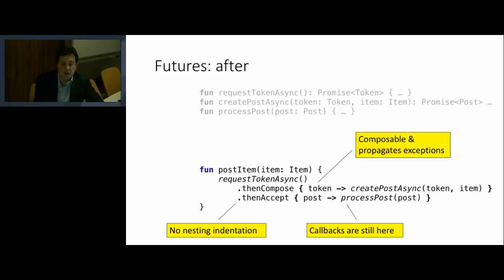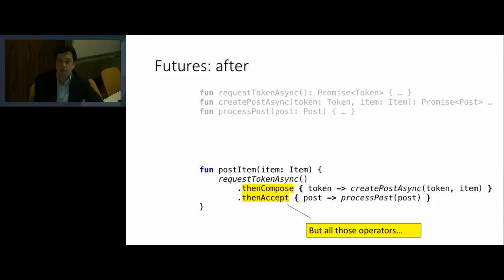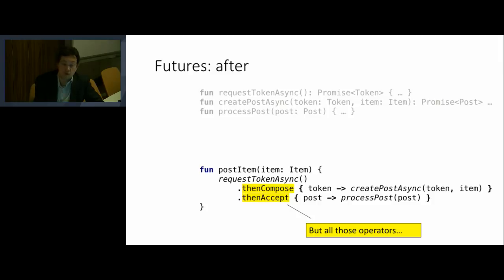Unfortunately, we can't just program with futures and move on, because when we program with futures we have all those operators we have to use. They don't actually add any value to the business logic — they're just glue that brings together different steps in our code. Worse of all, depending on which futures or promise library we use, the names of the functions would be different, and for every future type we use we have to basically relearn from scratch. We basically have to relearn programming — if we need a loop or exception handling, we have to find the corresponding operator. It's as if we are programming two different languages: one for general programming and one for asynchronous programming.